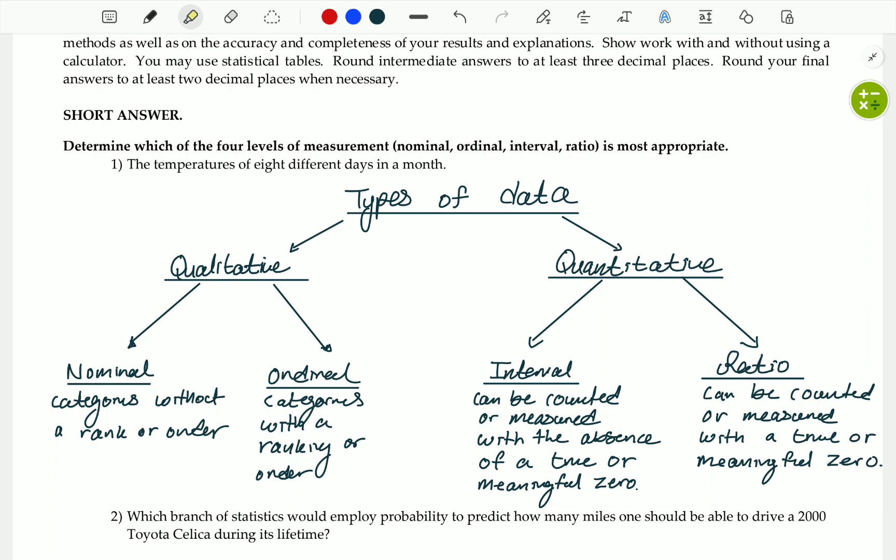Interval involves data that can be counted or measured. And we can determine the precise differences between the categories. Interval is numerical data that can be counted or measured with the absence of a true or meaningful zero.